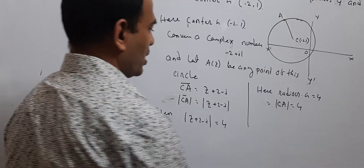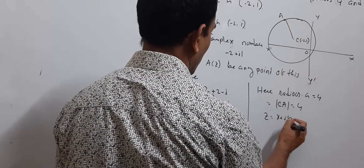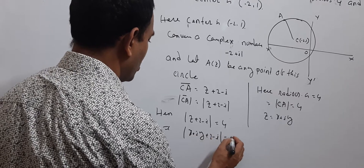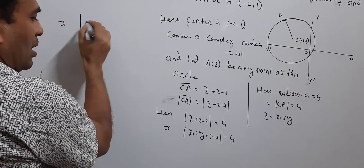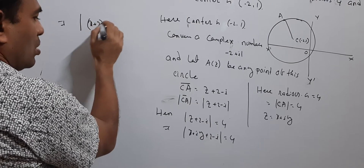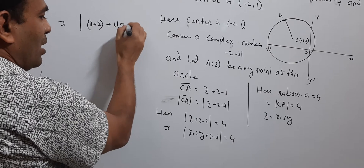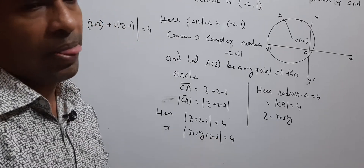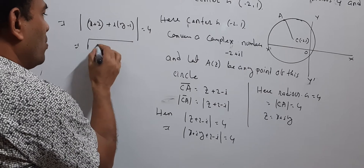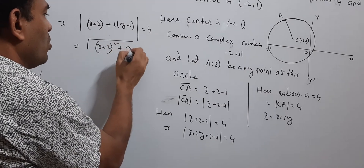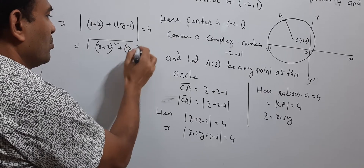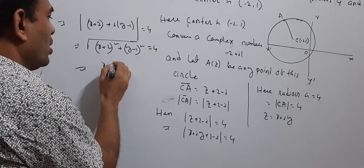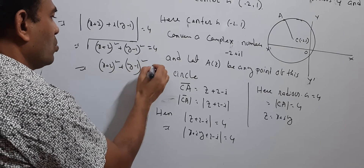Since z = x + iy, substituting: |x + iy + 2 − i| = 4, which gives |(x+2) + i(y−1)| = 4. Using the modulus formula: √((x+2)² + (y−1)²) = 4. Squaring both sides: (x+2)² + (y−1)² = 16.